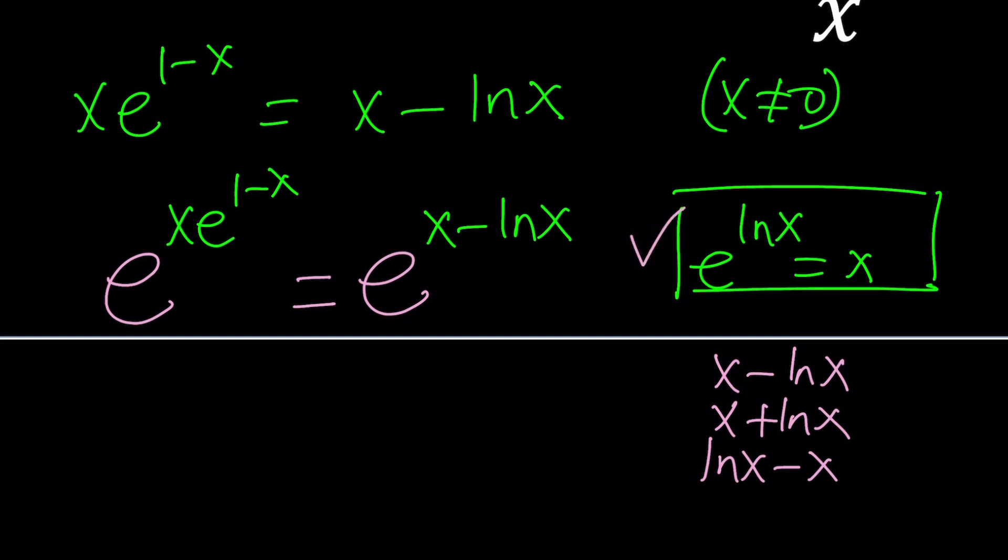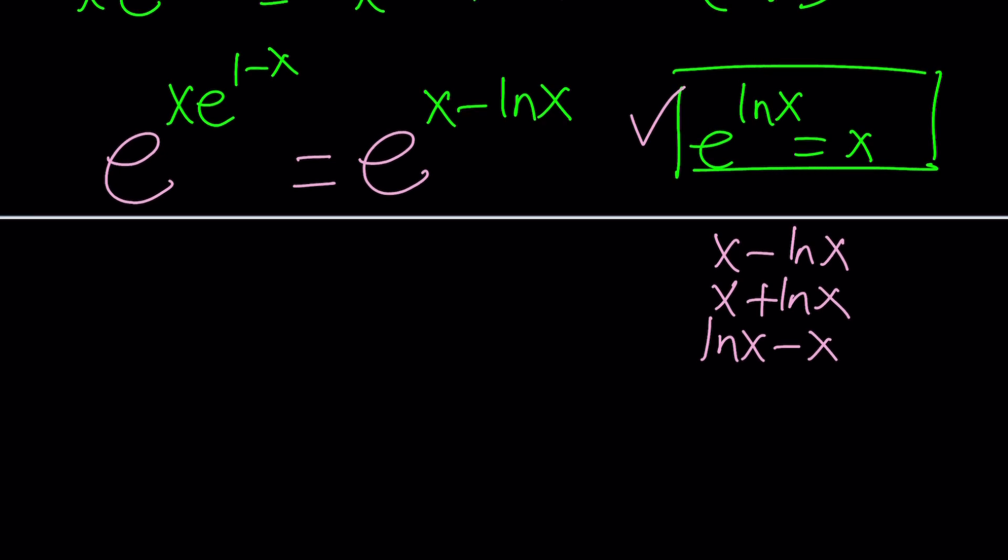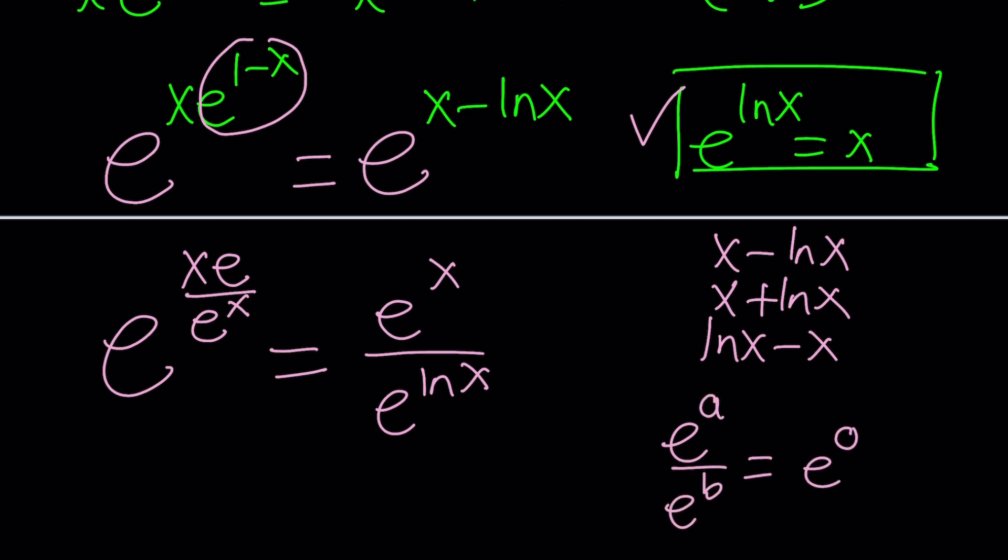Okay let's go and simplify this a little bit more. First of all here the exponents can be separated. So we can write this as x times e to the power 1 divided by e to the power x equals e to the power x divided by e to the power ln x. Because properties of exponents tells us this right?